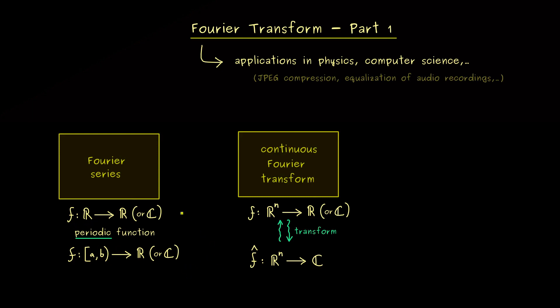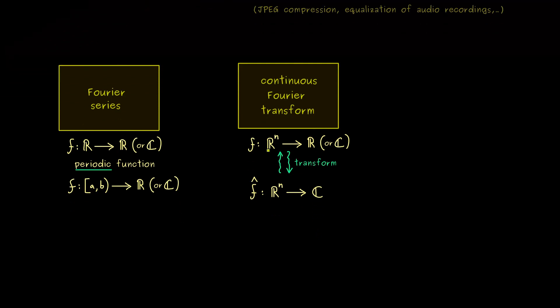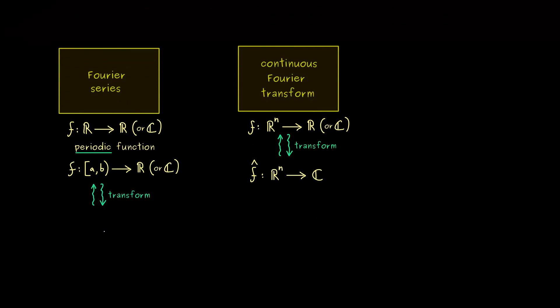Obviously you can always extend such a function to a periodic function defined on the whole real number line. And now for such functions we also have a transform described by the Fourier series. It's the same idea and you could also say we get out a new function f hat. But now it's different because this function describes coefficients of a series. Therefore we can just say the domain is the set of integers. But as before, the co-domain is always given by the complex numbers.